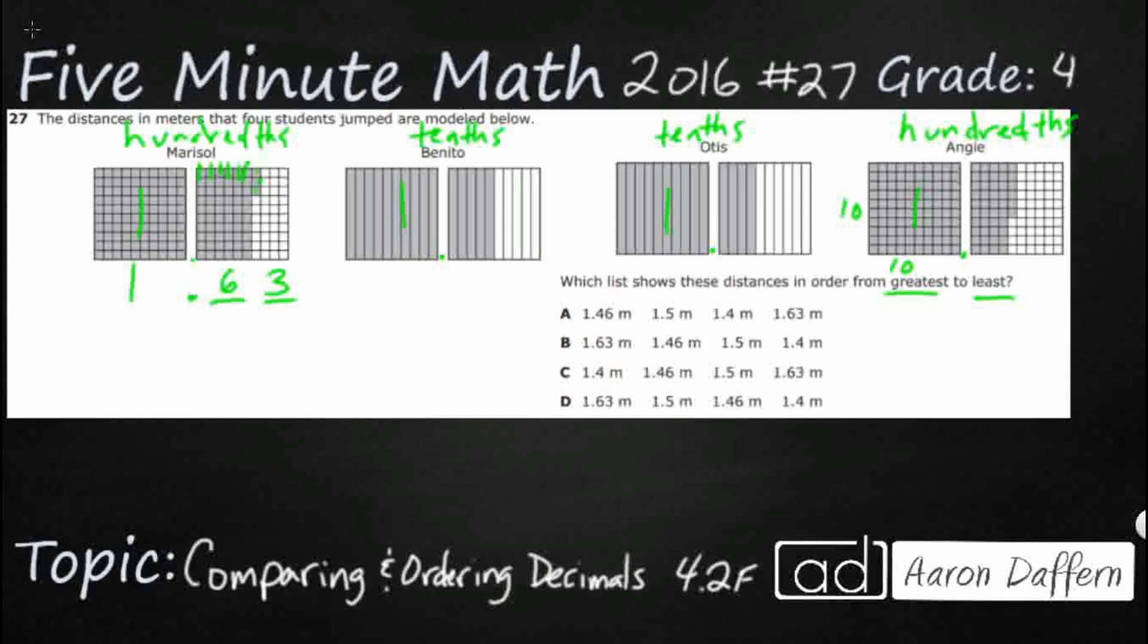Benito is going to be a little bit easier. It's going to be one point, and then just going to go to tenths. So, I've got one, two, three, four, five. Five tenths. One point five, or one and five tenths.